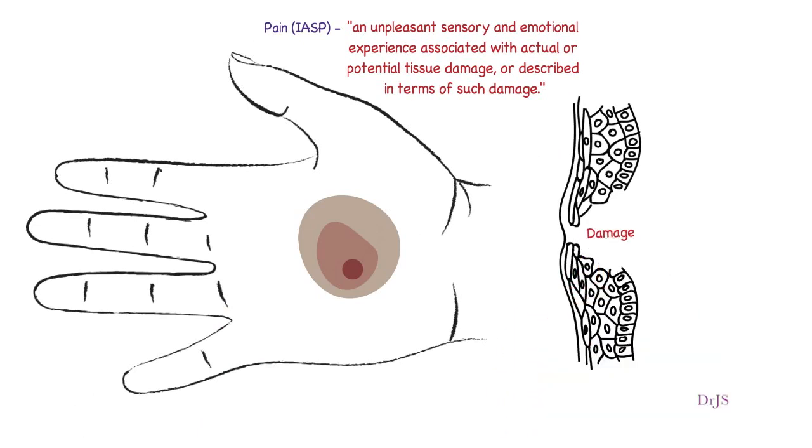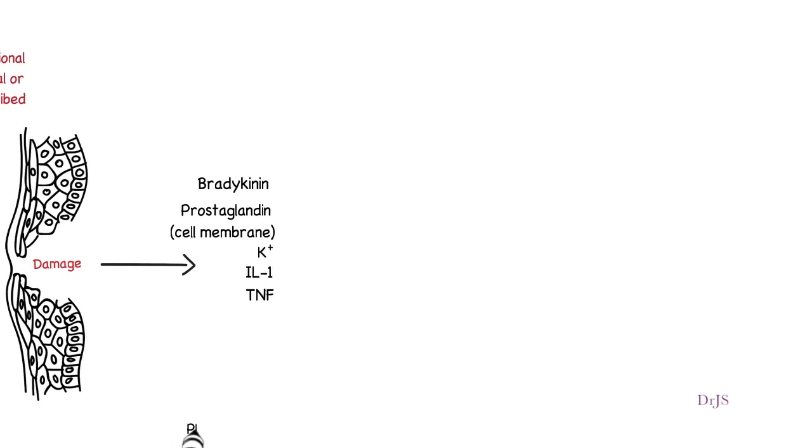When the tissue gets damaged, some chemicals are released. These are bradykinin, prostaglandin from the cell membrane, potassium ions, interleukin-1, and tumor necrosis factor. The platelets also secrete serotonin.